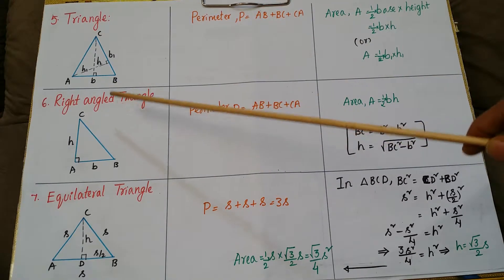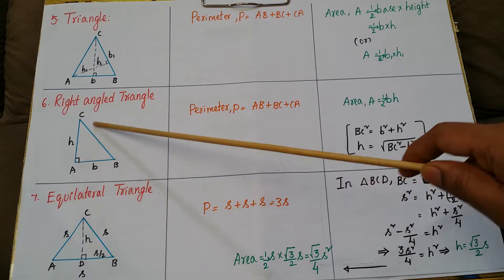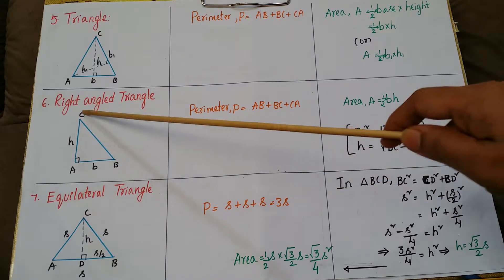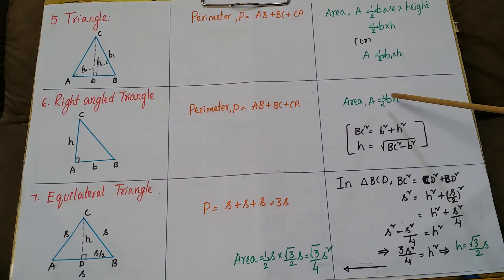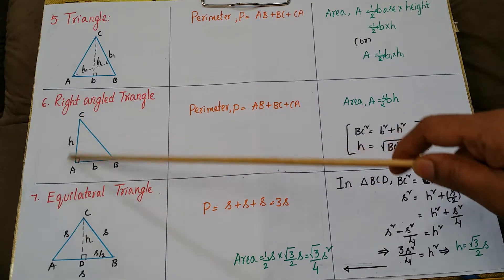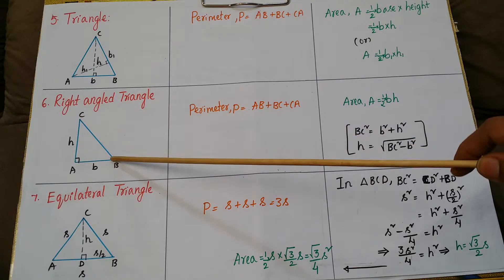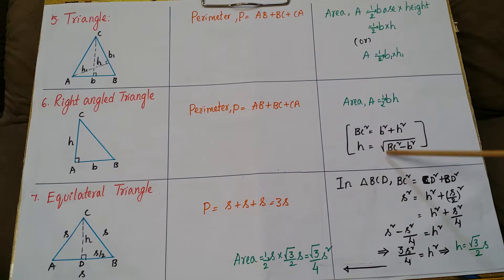For a right angle triangle ABC, the right angle is at one vertex and the hypotenuse is the opposite side. The two remaining sides are the legs. The perimeter is AB + BC + CA, and the area is ½ × b × h, where b is the base and h is the height. To calculate h, we use the Pythagorean theorem: BC² = b² + h², so h = √(BC² − b²).